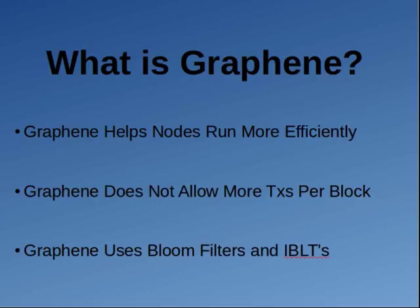The thing you have to know about graphene is I don't think you can use it on Bitcoin Segwit. I don't think it works whatsoever — I'm pretty sure that Segwit makes it impossible to ever implement graphene. So this is just another reason why Segwit's not all that great.